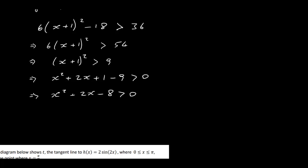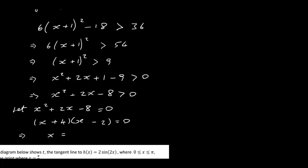First, let x squared plus 2x minus 8 equal zero to find the roots. Factorising: we need factors of 8 that give a difference of 2, so 4 times 2. We get x plus 4 times x minus 2. That gives us x equal to minus 4 or x equal to plus 2.